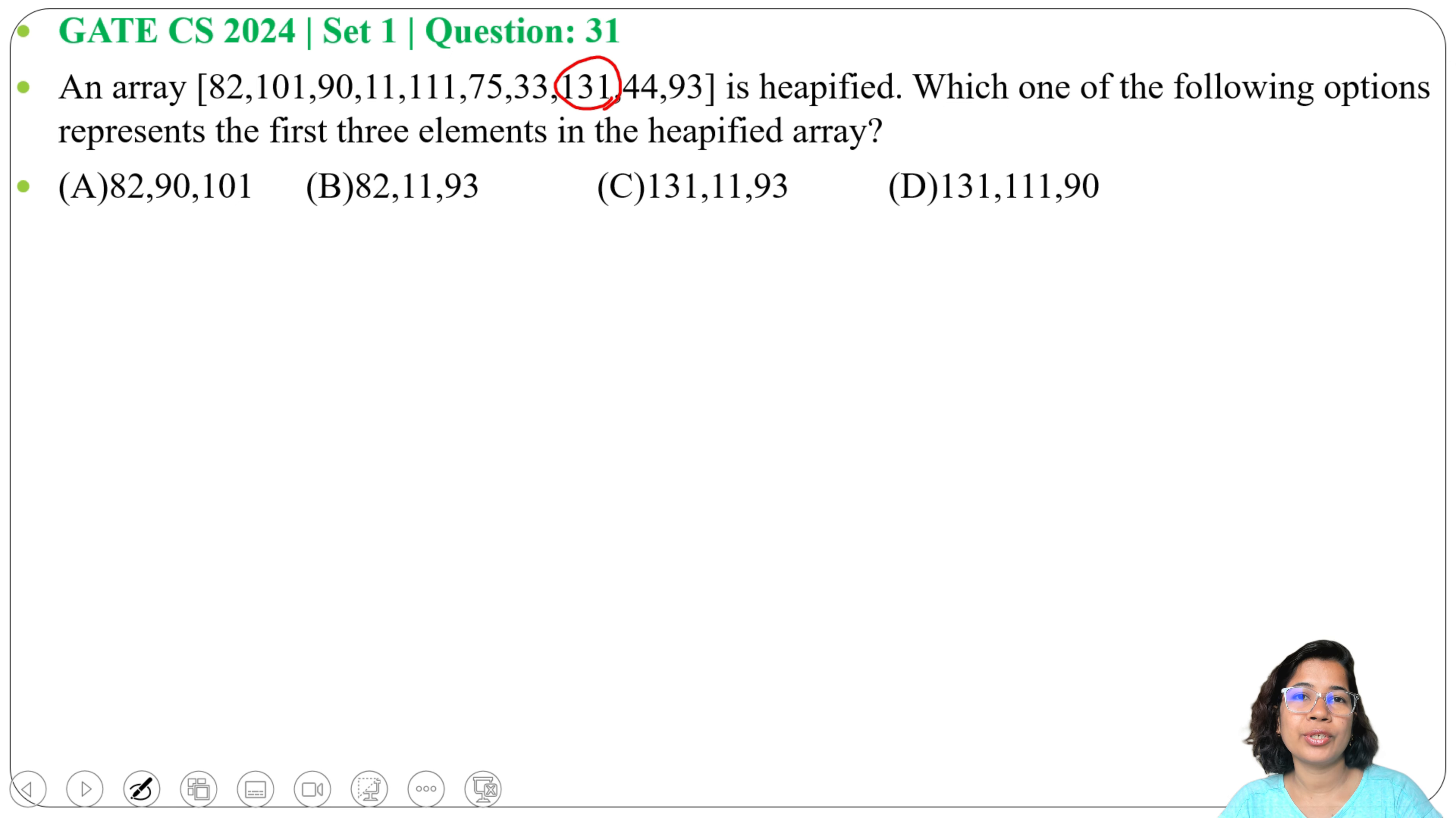When we write max heap in array representation, we store in level order. First we store the root, then second level, then third level. Root will be the first element of the array, so that's why 131 should be the first element.